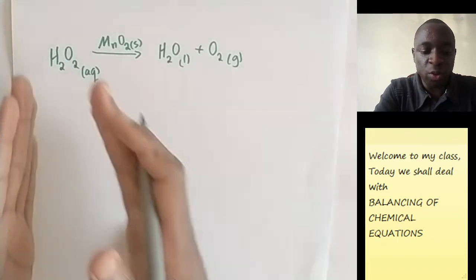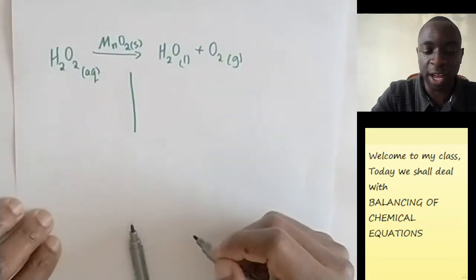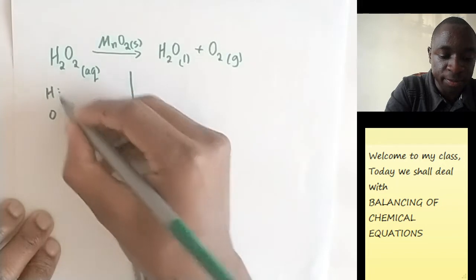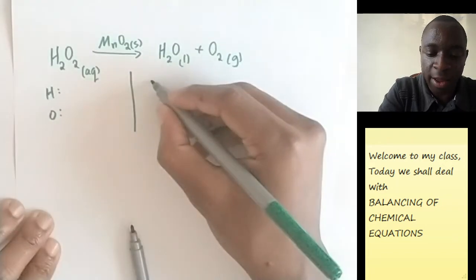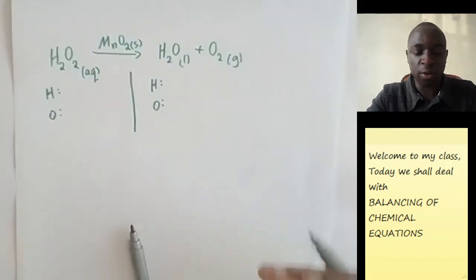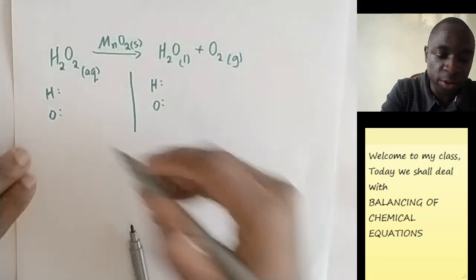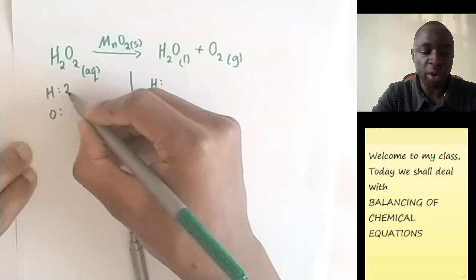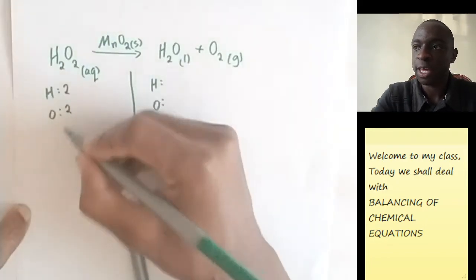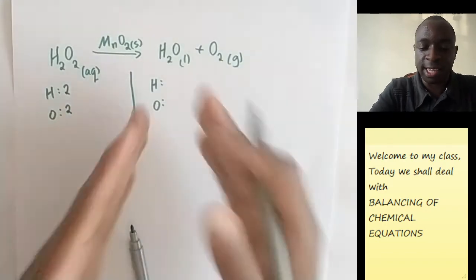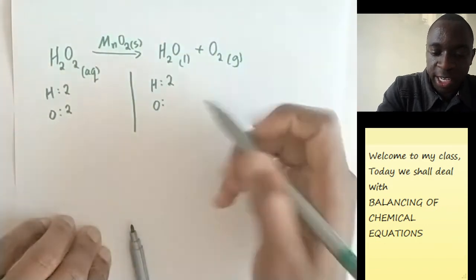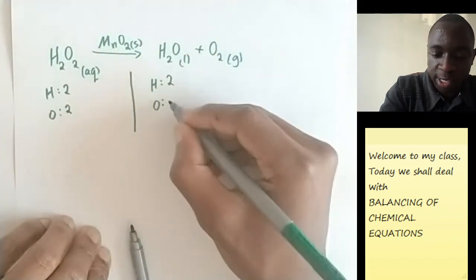So now we look at the reactor side. What elements do we have here? We have hydrogen and oxygen. And the same elements are present on the product side. So once again, we count. We have two hydrogens here, so we put a two. And we have two oxygen here, so we put a two. The next one is the other side. Now on this side, we have hydrogen, which is 2, but oxygen is 1 plus 2, which is a 3.